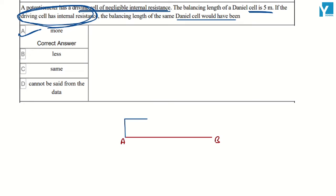You have a driving cell. You need to keep internal resistance here. We connect this to AB.